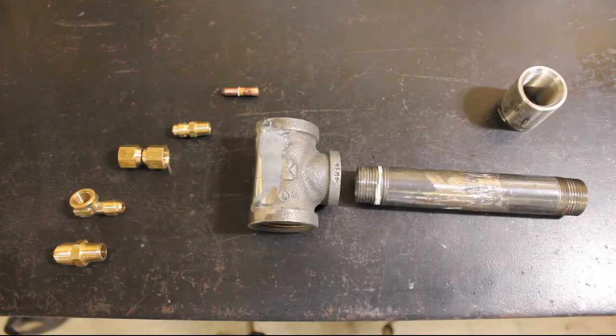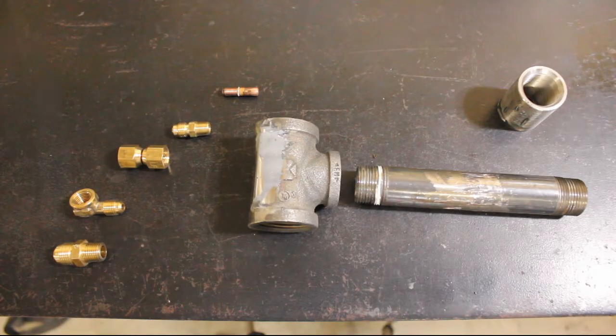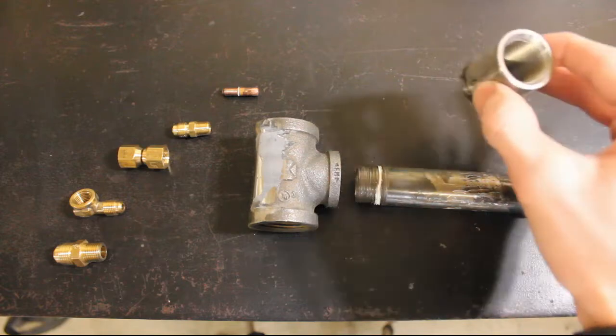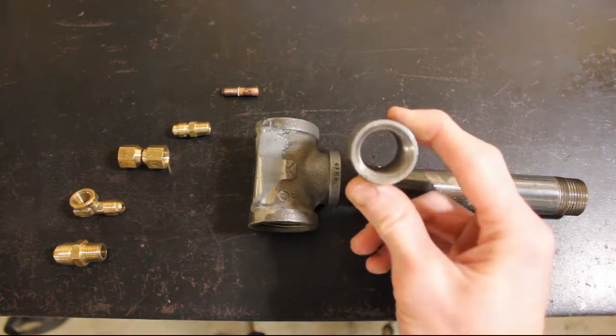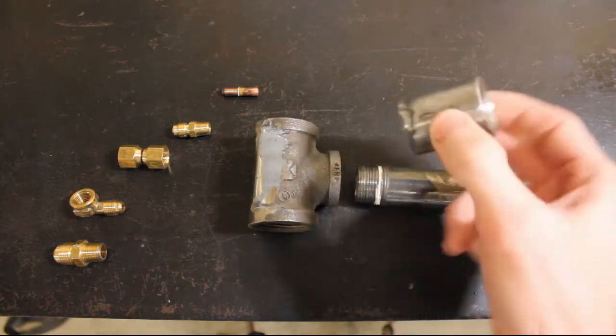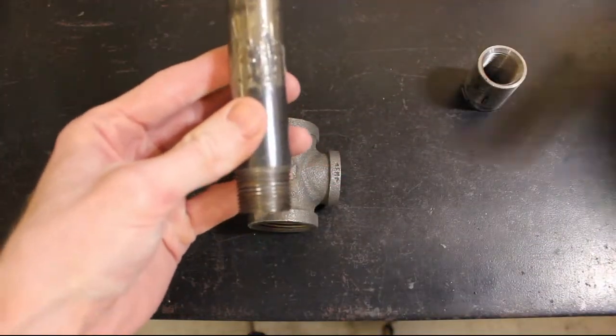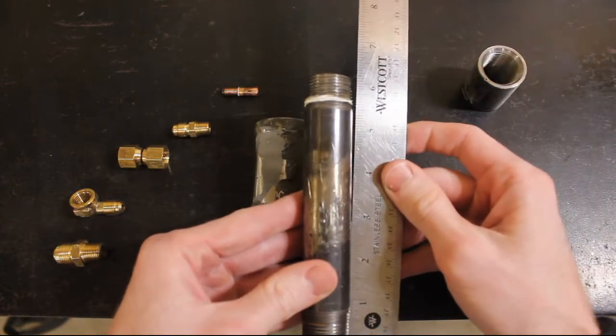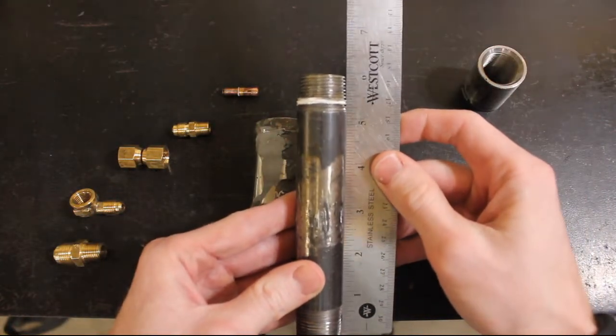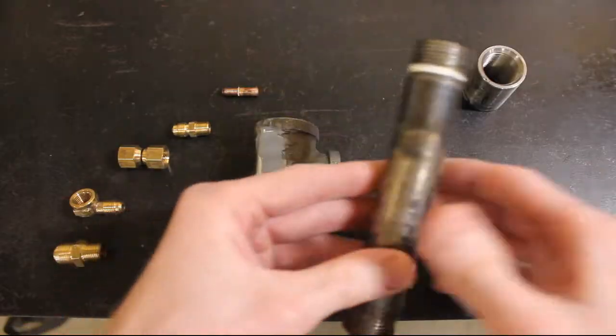So let's start from the top with the components. You're going to need a 3/4 inch merchant's coupling. We'll get more into the details of this merchant's coupling versus a reducer later on in the video. You'll need a 6 inch by 3/4 inch nipple, a 1 inch by 1 inch by 3/4 inch T.